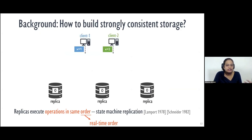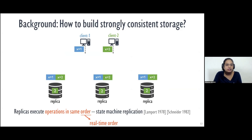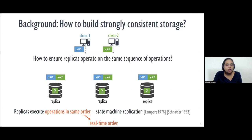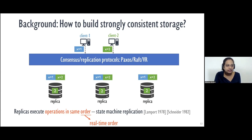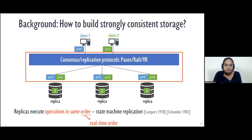Ensuring all replicas execute the same sequence of operations is the job of a consensus or replication protocol. You may have heard of protocols like Paxos, Raft, or Viewstamped Replication. These protocols ensure all replicas execute the same sequence of operations in real-time order. In these systems, each replica has a log in addition to the storage system state, where incoming client requests are stored. One replica is designated the leader and the others are followers.